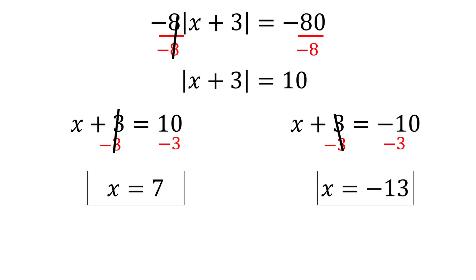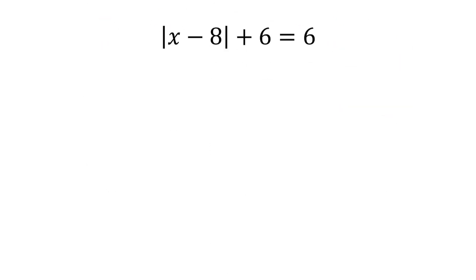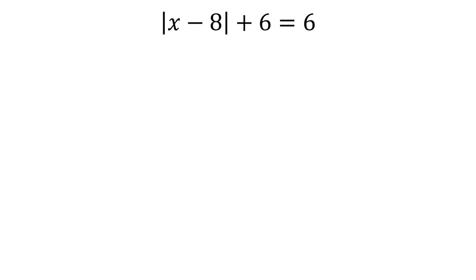Okay, one final problem. We have the absolute value of x minus 8 plus 6 is equal to 6. The first step for all of these problems should be to isolate the absolute value to one side of the equation.